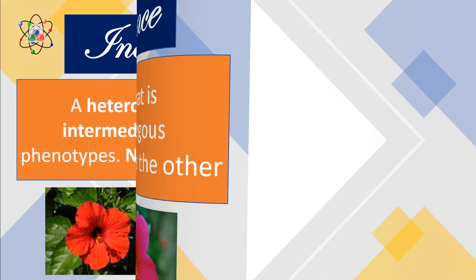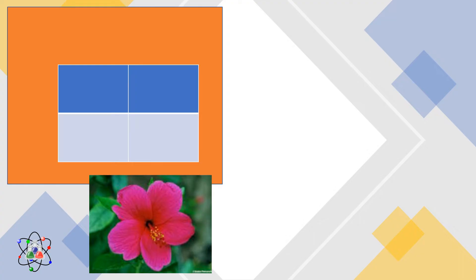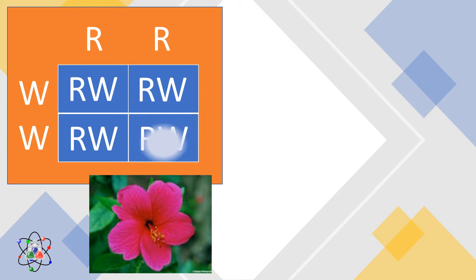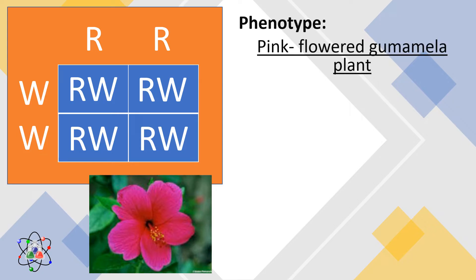By using this Punnett square, let us cross the red-flowered gumamela plant represented by Rr to a white-flowered gumamela plant, Ww. By multiplying the alleles, the resulting offspring will all be Rw. Since the offspring is intermediate between the characteristics of the parents, we will not read Rw as red-white, but instead the offspring's phenotype is a pink-flowered gumamela plant.